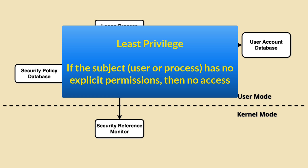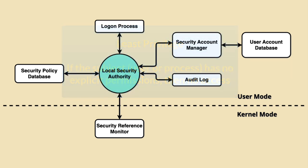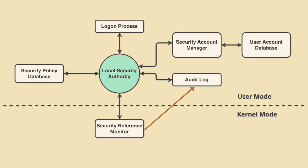This principle helps minimize the risk of accidental or intentional security breaches. In addition to enforcing access controls, the SRM also audits and logs security-related events. When a user or process attempts to access a protected resource, the SRM can generate an audit log entry that records the details of the access attempt. This information is invaluable for forensic analysis and can help administrators identify and respond to security incidents.